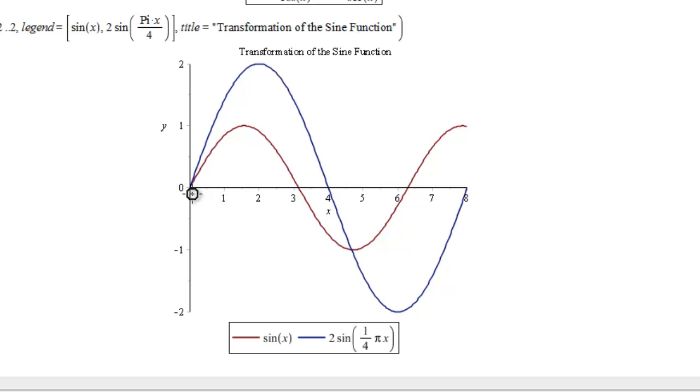What we have here is in red, we have this curve that is our sine function, and in blue we have a similarly shaped curve that is 2 sine of π over 4 times x. And we see indeed the blue curve is taller, and also its period, the amount of time before it repeats, is wider, which is just what we would expect given the transformations we did to that function.